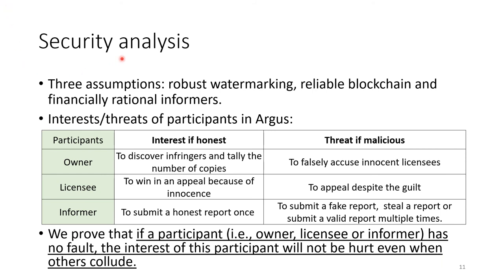We also analyze the security of our Augurs system. In the Augurs system, we have three assumptions. First, robust watermarking: except the owner, no one can remove or compromise the digital watermarking without significant data distortion. Second, reliable blockchain: the blockchain consensus and smart contract should be secure. Third, informers should be financially rational, meaning informers only care about maximizing their bounties. With these three assumptions, we define the interests and threats of participants in Augurs as shown in a table. Based on this, we prove that if a participant has no fault, the interest of this participant will not be hurt even when others collude.